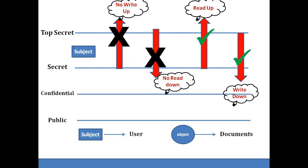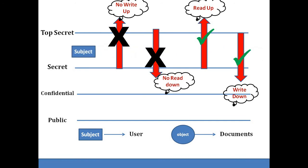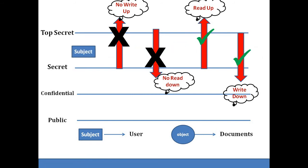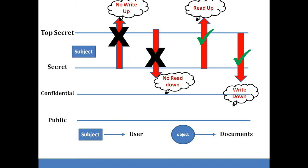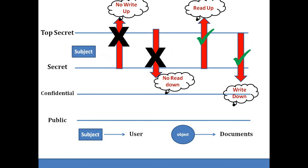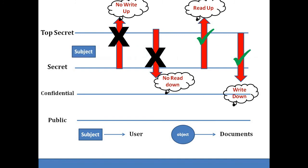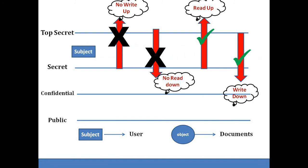Now let us see the basic principles of the Biba Integrity Model in maintaining the integrity of data. In this diagram, four types of information are shown with their levels of priority. Here, subject means the user and object means the documents. In the first example, a user has access to secret documents — his or her level is only confined to secret documents. Hence this user can read and write all documents between the top secret and secret levels. But this user cannot be allowed to read any document at the lower level, that is, confidential as well as public documents.